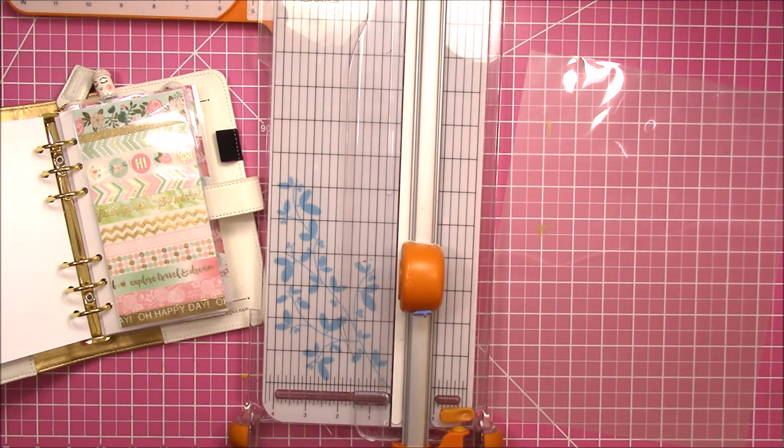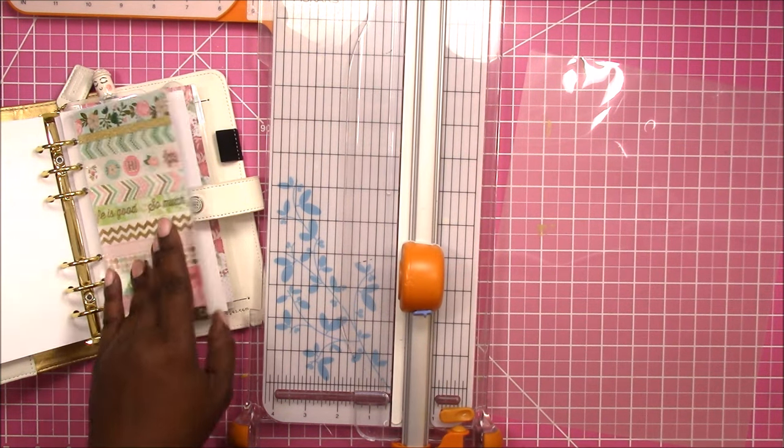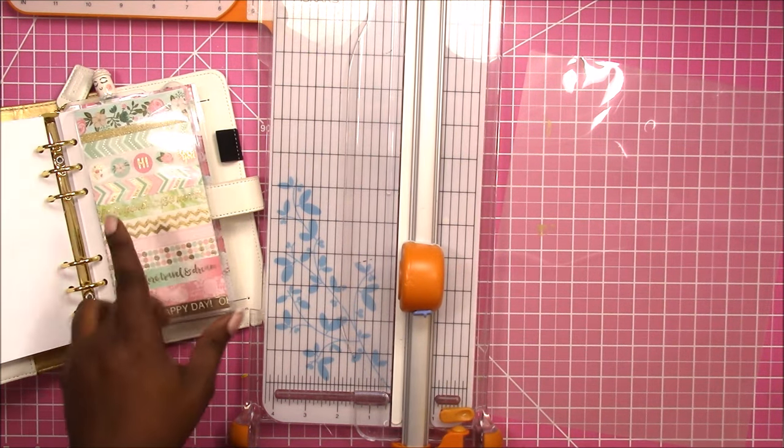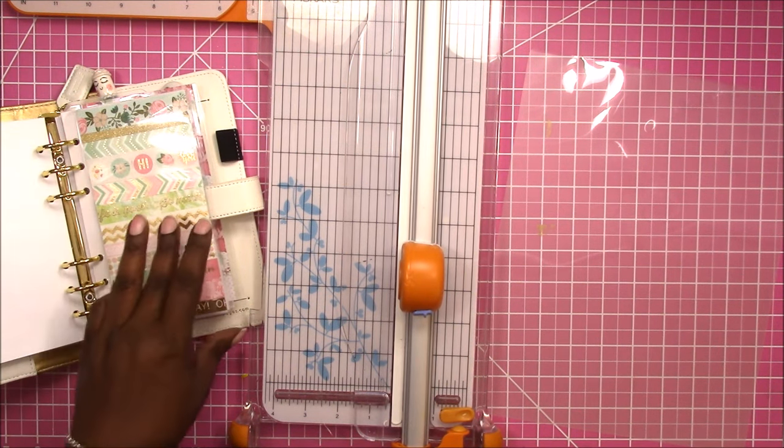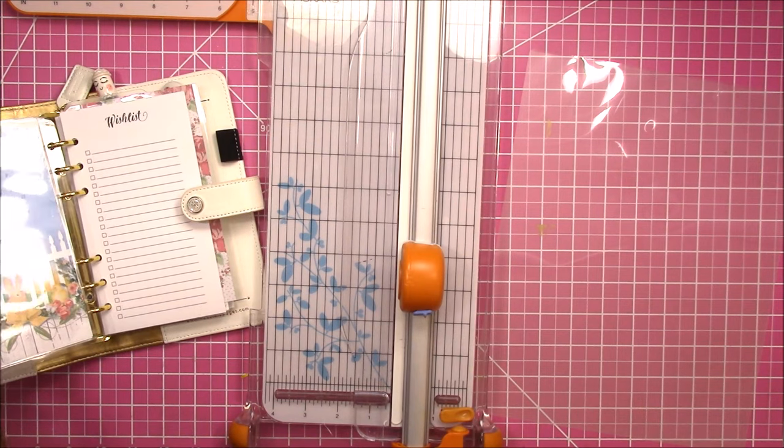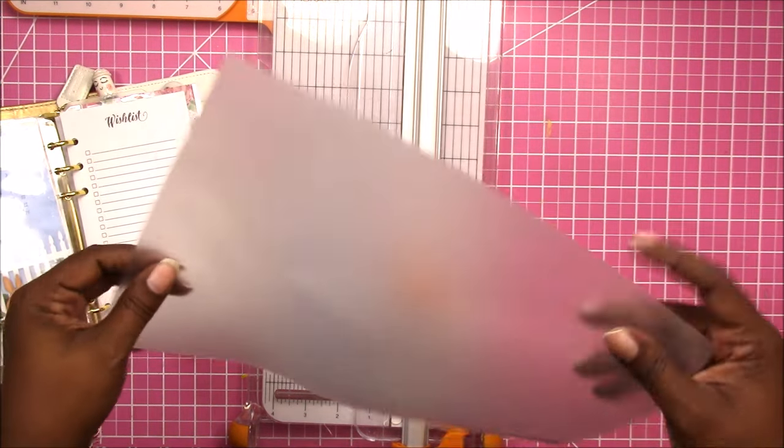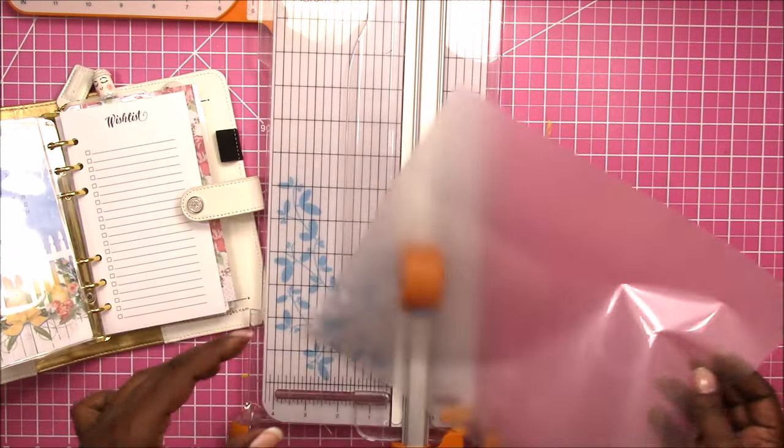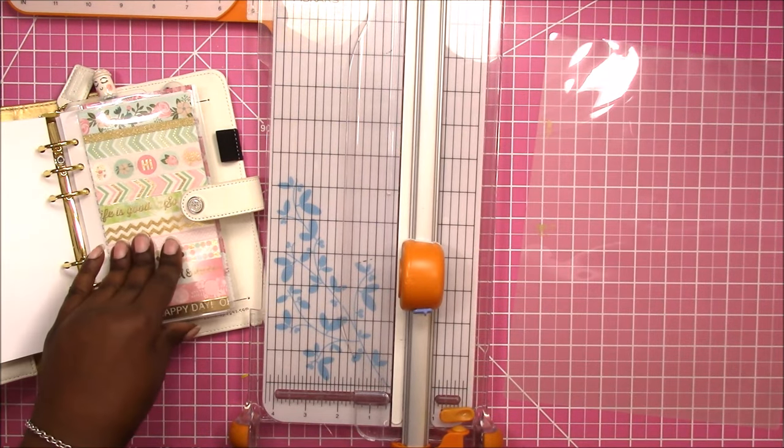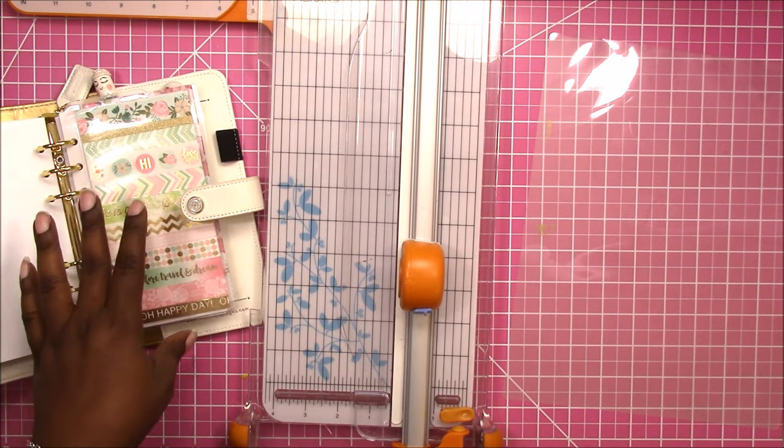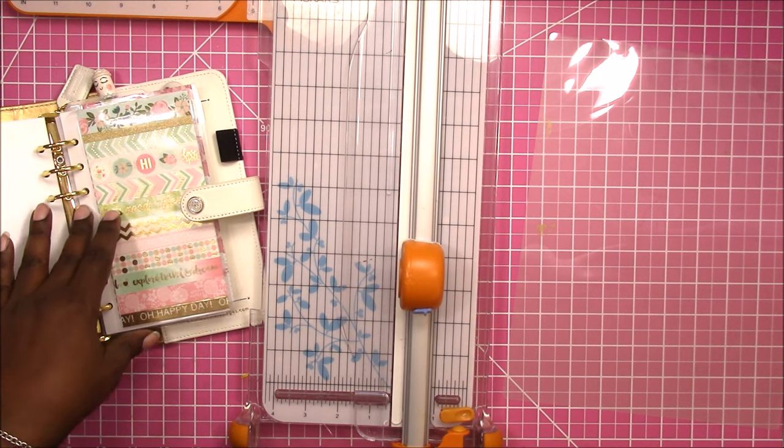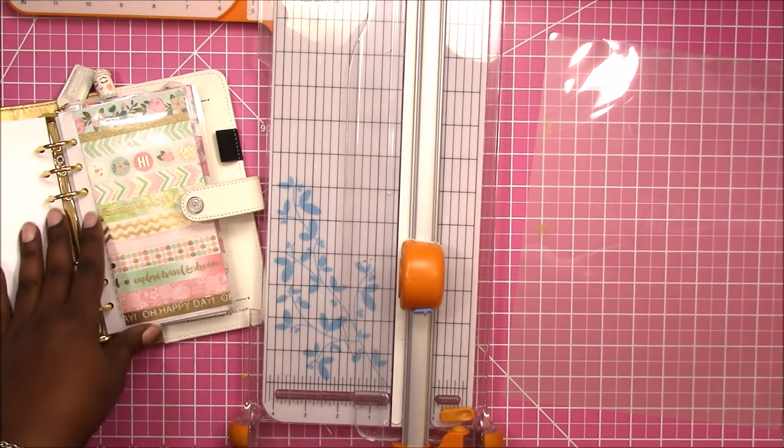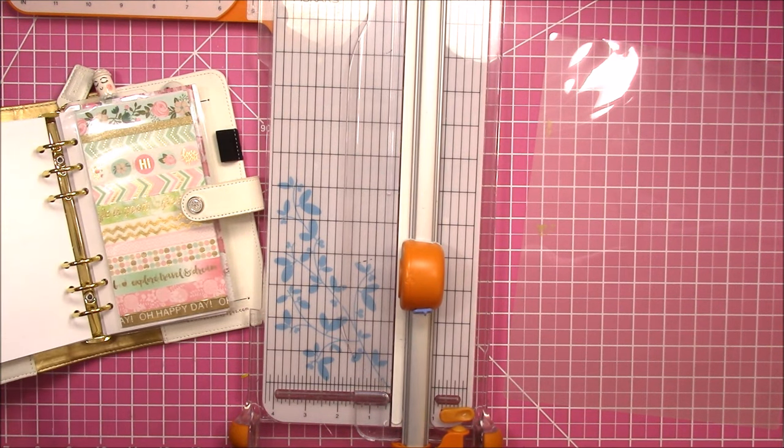Hi, this is Rochelle with Scrapcraftastic, and today I'm going to show you how to make a reusable dashboard for a personal size binder using a laminate pouch and laminator. This is basically the same concept that I use in the reusable dashboard using only the laminate pouch, so let's just go ahead and get started.